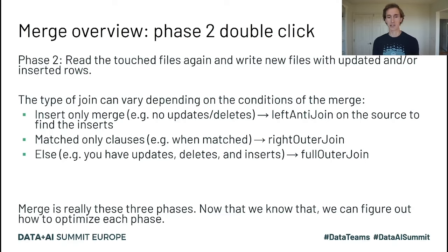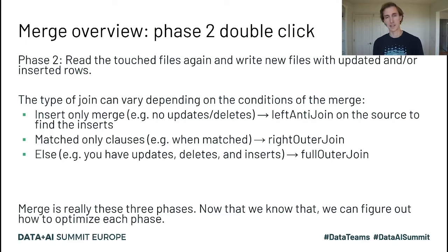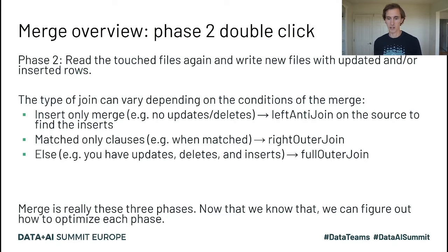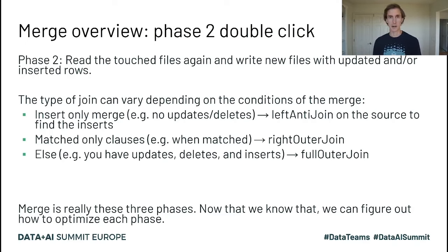If we're doing a matched-only clause — so 'when matched' — that's going to be a right outer join. Otherwise, if we have updates, deletes, and inserts, we do a full outer join. The consideration is: if you know Spark well, you can understand that a left anti-join can be broadcasted, and so can a right outer join, but a full outer join may not be broadcasted.